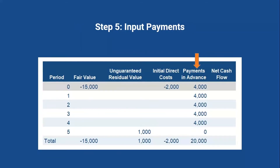Next are the actual payments. This is a five-year lease with $4,000 payments made in advance at the beginning of each year, so these are positive cash flows for the lessor. They start in period zero because the first payment and all subsequent payments are made at the beginning of the year. There is a zero in period five, indicating all five payments have been captured in periods zero through four.